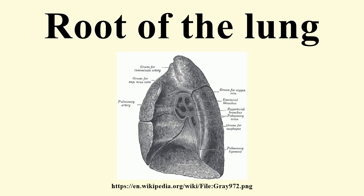The root is formed by the bronchus, the pulmonary artery, the pulmonary veins, the bronchial arteries and veins, the pulmonary plexuses of nerves, lymphatic vessels, bronchial lymph glands, and areolar tissue, all of which are enclosed by a reflection of the pleura.